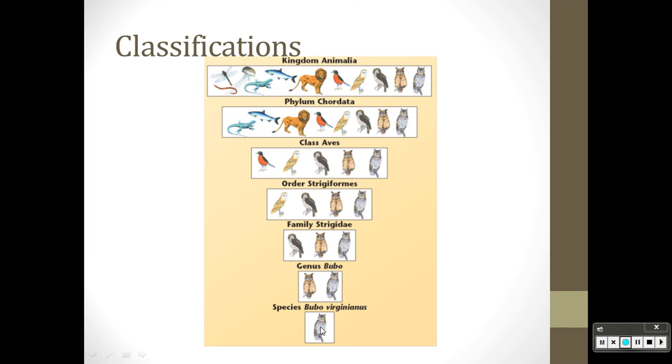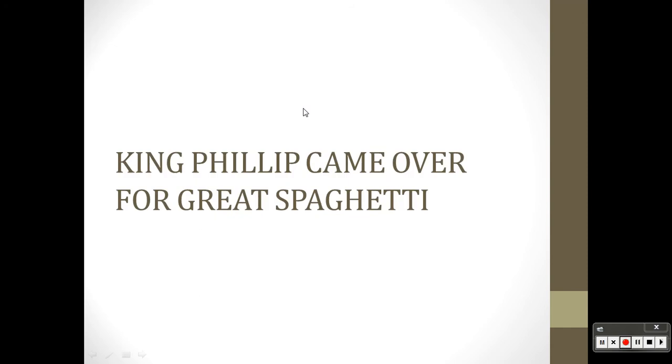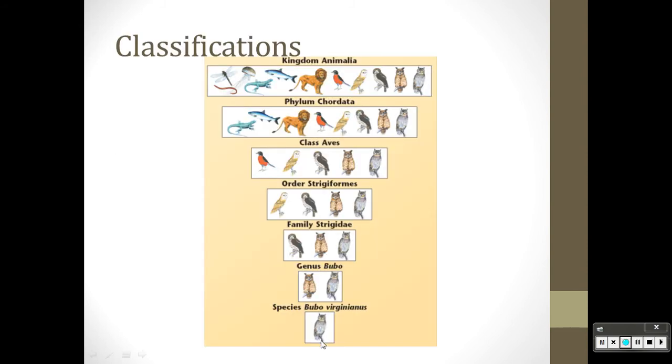Easy way to remember those groupings: King Philip came over for great spaghetti. Key to the word species: species are groups of animals that can mate and their children can also mate and have children.